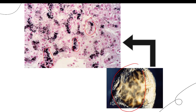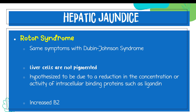The reason behind the dark pigmentation of the liver in Dubin-Johnson, as stated by Henry's, is the accumulation of lipofuscin pigment — brown granules coming from the degradation of lipids. So there is dark pigmentation present in the liver due to lipofuscin.